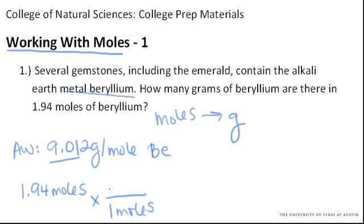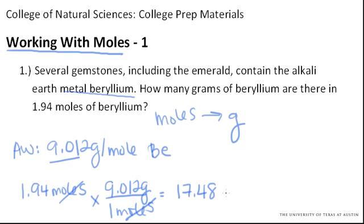Put our mass on top, moles cancel. Multiply that out, and you find that you get 17.48 grams of beryllium. That's your answer.